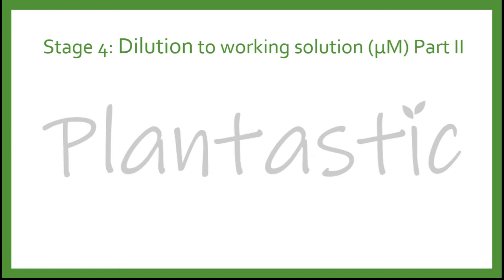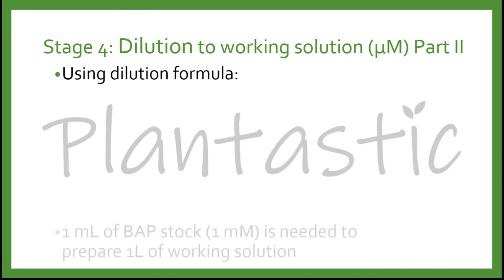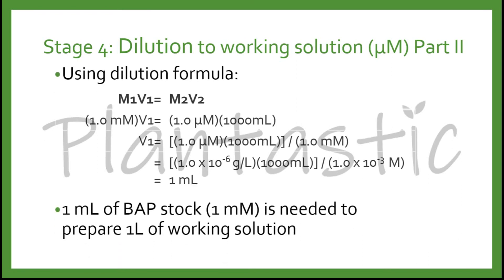In this slide, we show how to dilute the stock solution from millimolar to micromolar. By using the formula M1V1 = M2V2, you can find that for 1 liter of working solution at 1.0 micromolar, we need only 1 ml of the stock solution. Here is the prefix table for your reference.